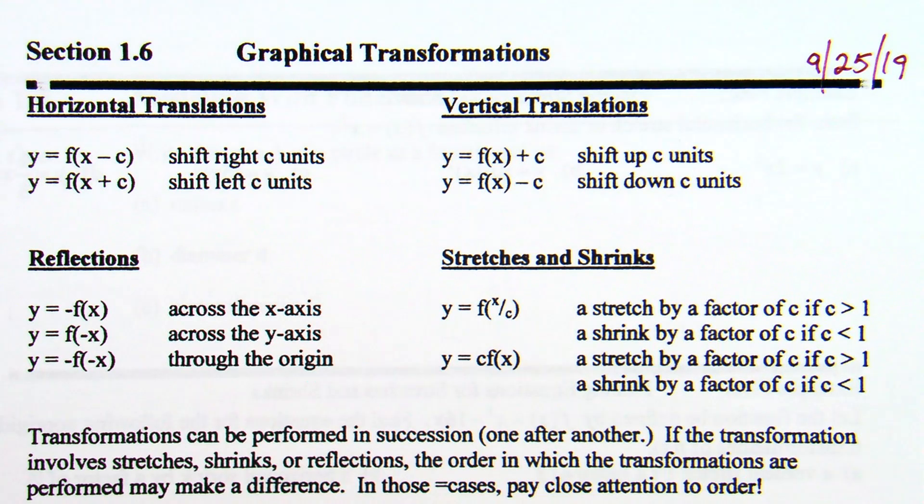Let's start just glancing at some basic information. You've got a chart of information up here. Horizontal translations - you guys remember how horizontal translations work? How we know if something's going to move left or right. It's in the parentheses, under the square root, in the absolute value. It's with the X, with the variable.